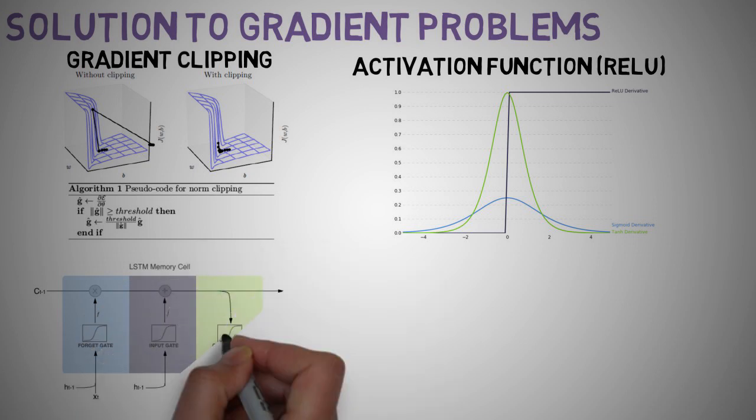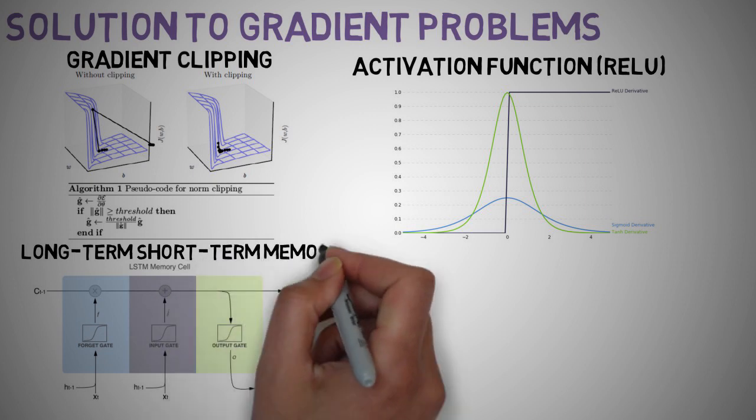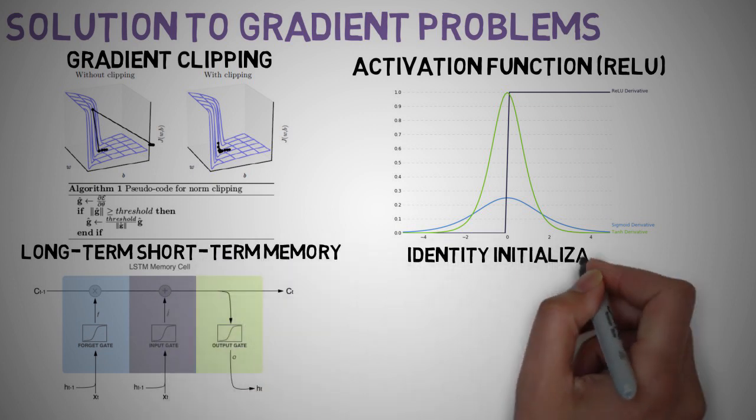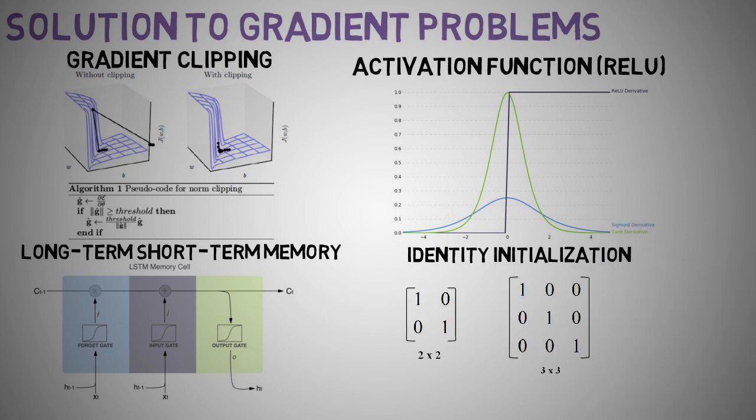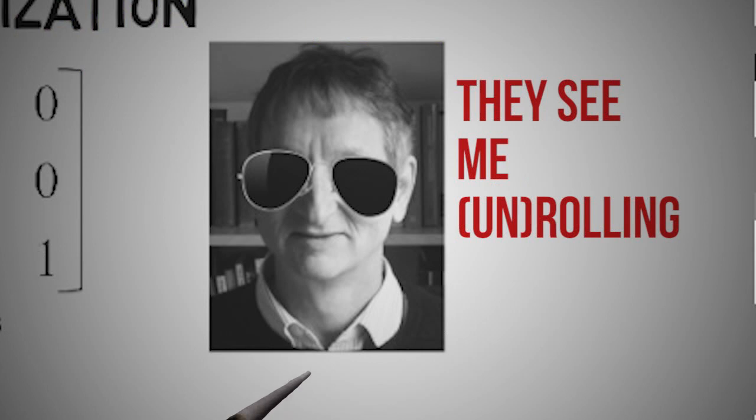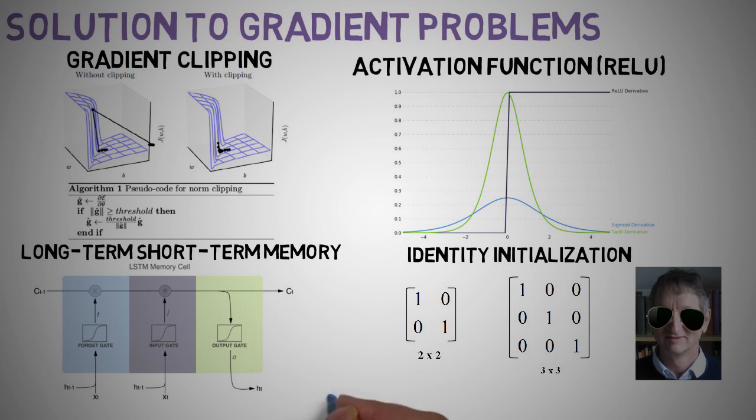Long-term, short-term memory, or LSTMs. We'll discuss this popular method in detail in a bit. Identity initialization. This is where an identity matrix or a scale version is used to initialize the recurrent weight matrix. Geoffrey Hinton et al. found that their solution is comparable to LSTMs on four benchmarks. Check out his paper called A Simple Way to Initialize Recurrent Networks of Rectified Linear Units, also known as ReLU.